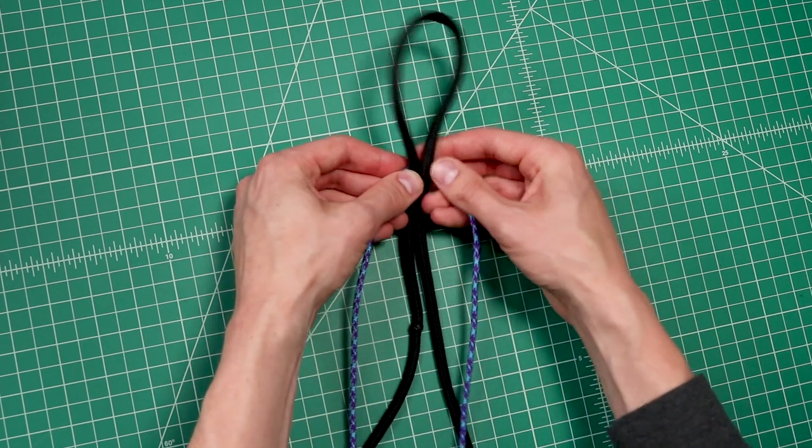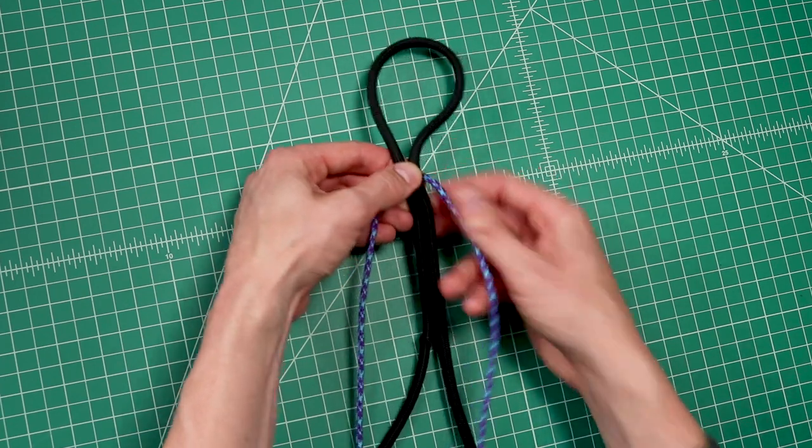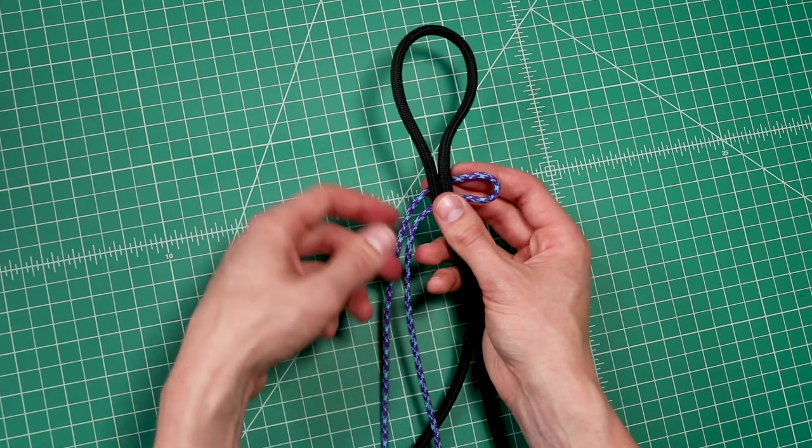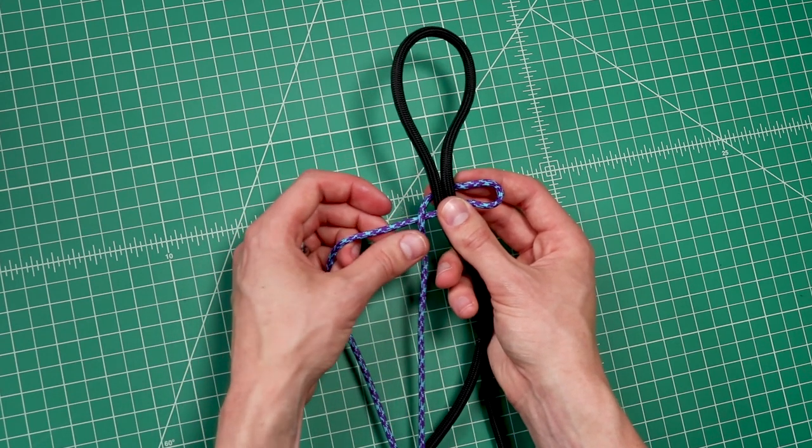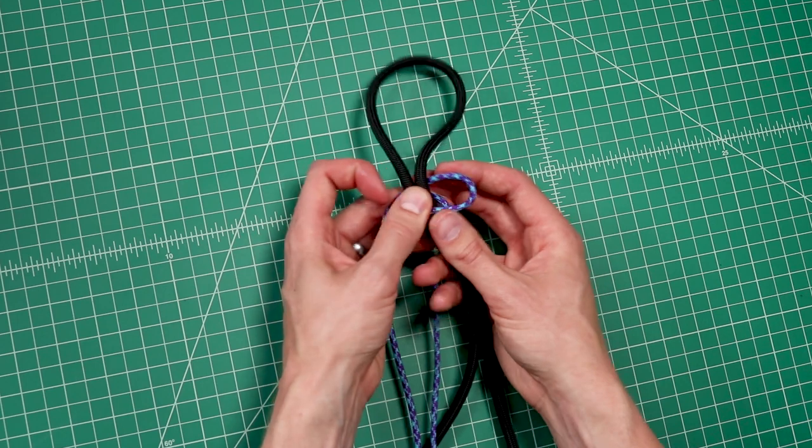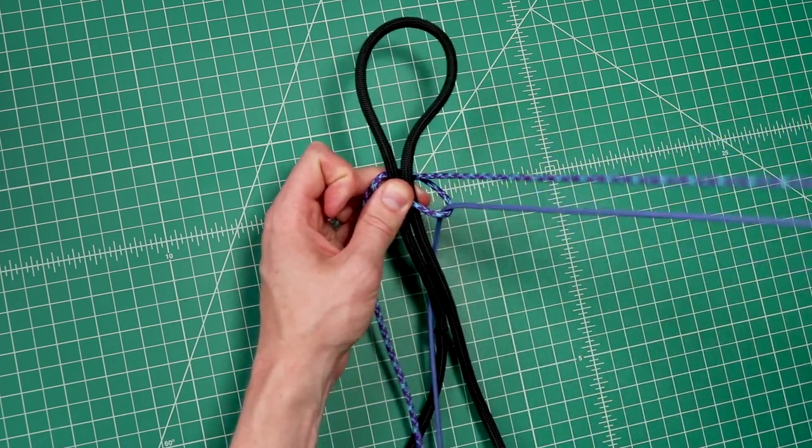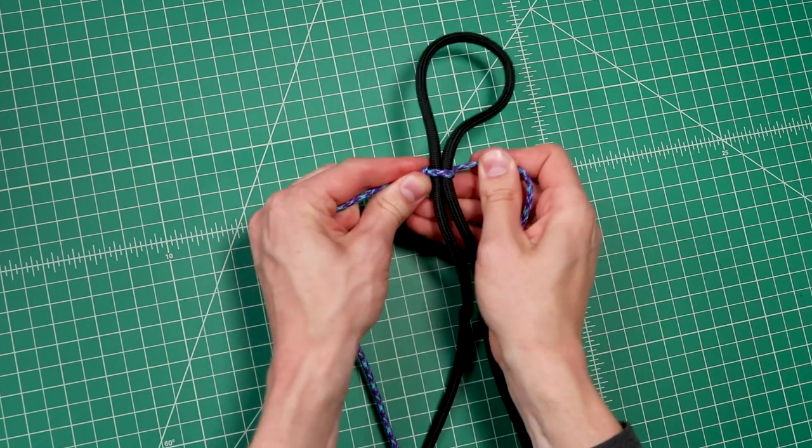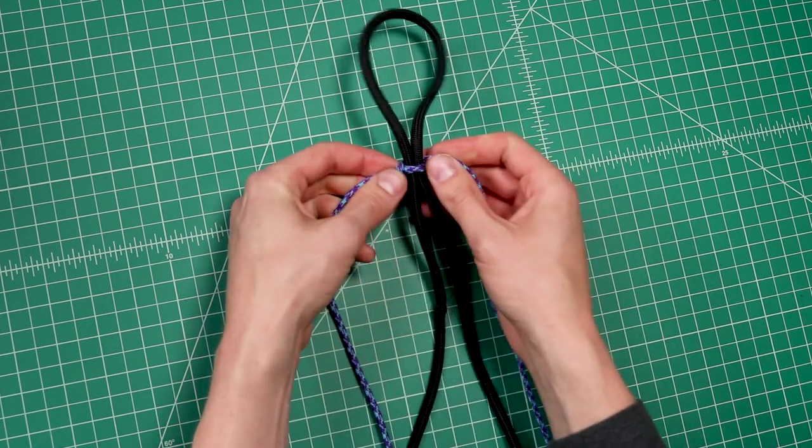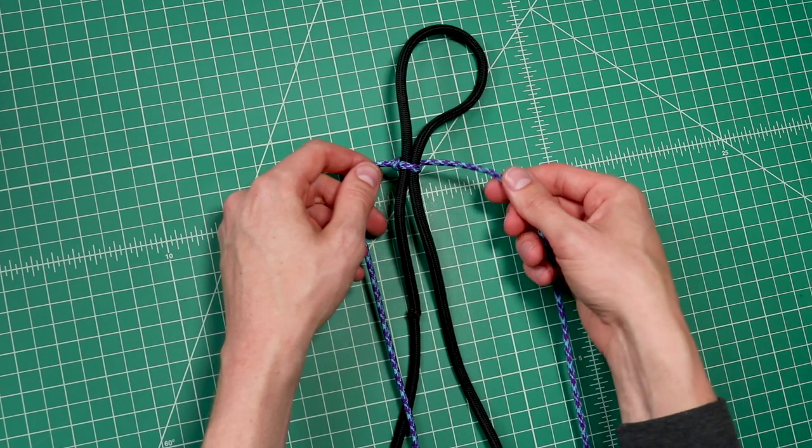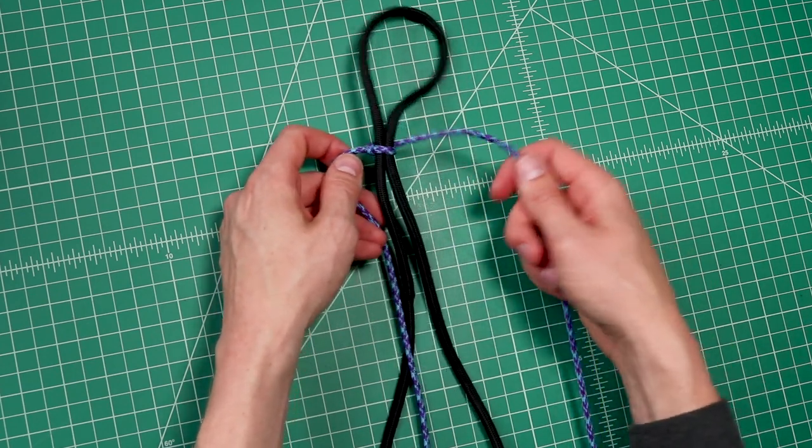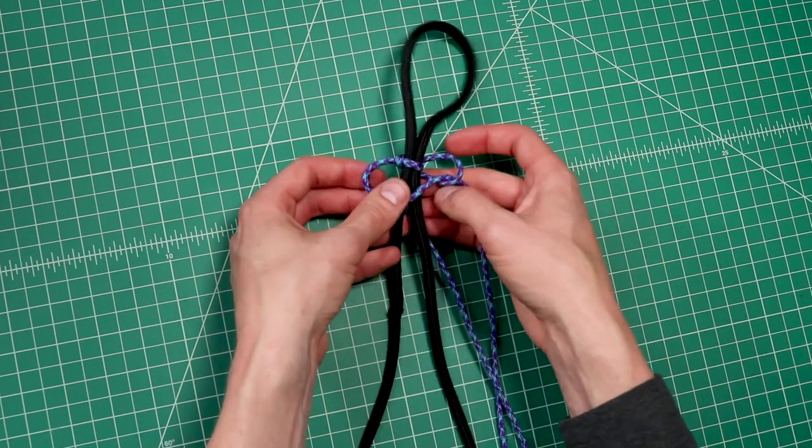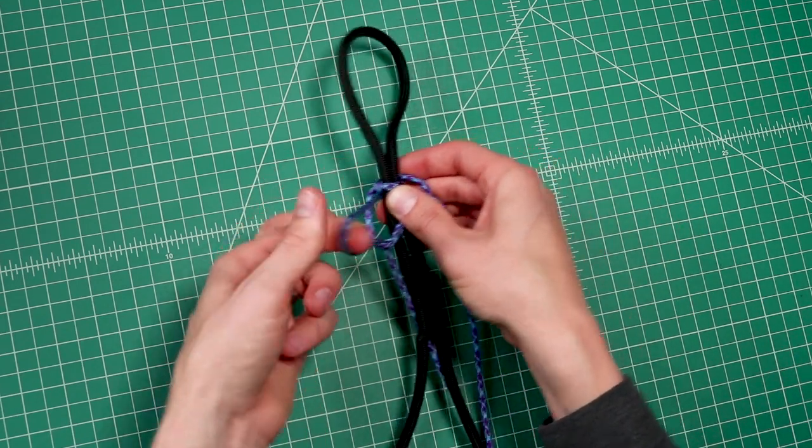So we're just doing a normal Cobra weave to start out with. It's going to turn into the King Cobra, but it starts out just the same. So put one cord over the top. The other one goes over that cord, but then down around the back of your Paramax and up through the opposite side hole. And that knot's going to alternate every time you tie it. So now we put the right side over. The first time we put the right side over, now we're going to take the left side. Right side goes over that one, around the back, and up through the loop.